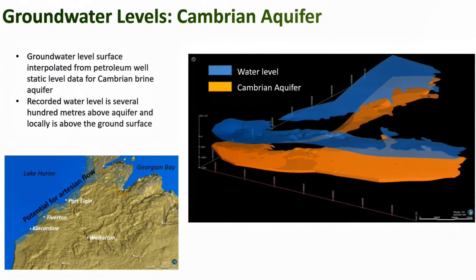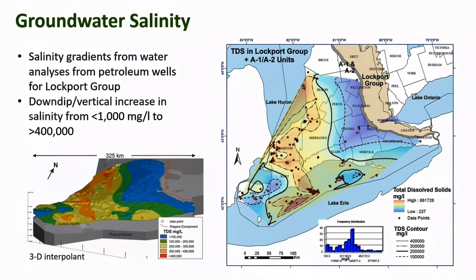This example is for the Cambrian aquifer, where the groundwater level surface is interpolated from petroleum well static level data and the recorded water level is several hundred meters above the aquifer and locally above the ground surface. There is enough water analytical data from the Lockport Group A1 and A2 units to construct a groundwater salinity gradient map, showing increasing salinity with depth from the subcrop.